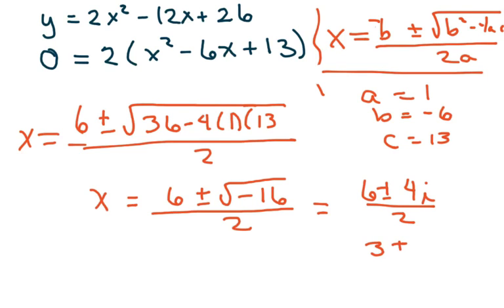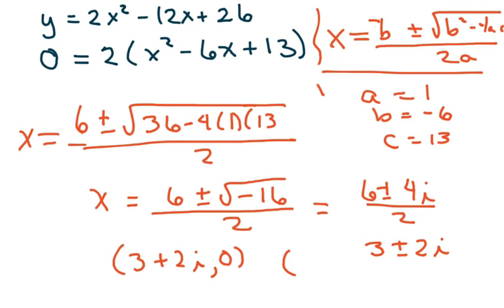That simplifies to 6 plus or minus 4i over 2, which reduces to 3 plus or minus 2i. So my other two intercepts are (3 plus 2i, 0) and (3 minus 2i, 0) written in intercept form.